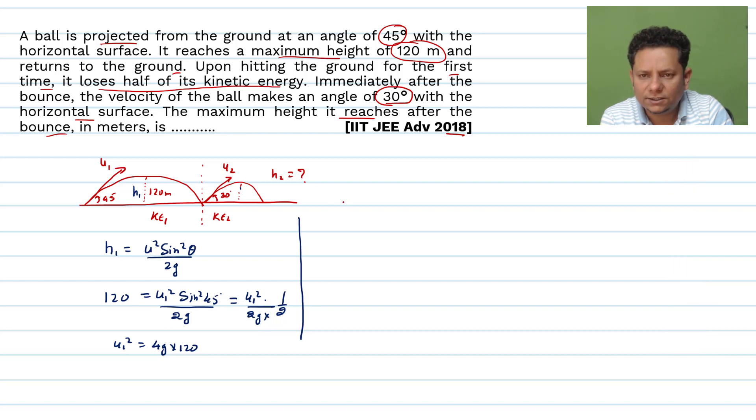Now we are saying that the kinetic energy is half. So it means half of kinetic energy 1 will be equal to kinetic energy 2.